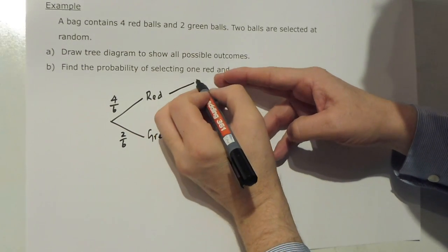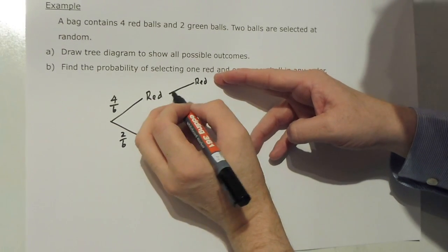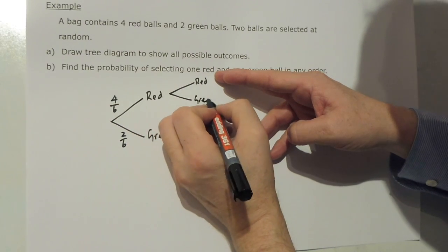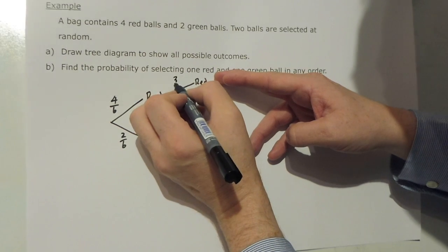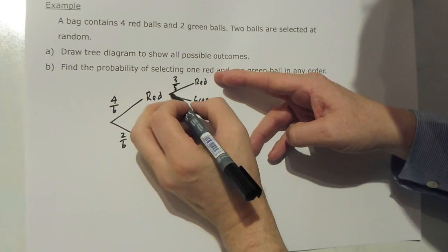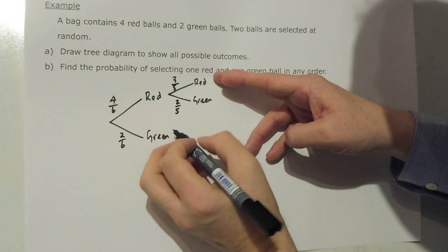If I select a red, then the second ball could be red or it could be green. However, there's now only 3 red out of the 5 and green there is still 2 out of 5.